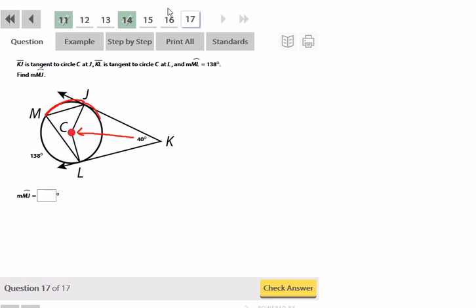This 40 degree angle is supplementary with measure of angle JCL. And since JCL is a central angle, that's going to be the same as arc JL. So the measure of arc JL is equal to the 180 minus the 40. So that's going to be 140 degrees. So out here on the outside, we have 140 degrees.